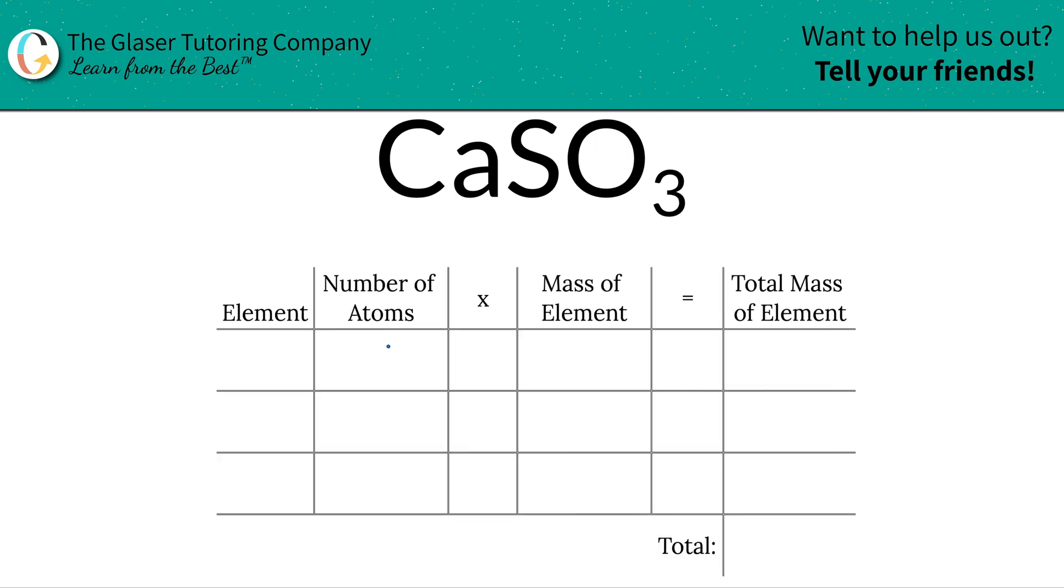So the first thing is I'm going to write down the elements in the compound. So we have calcium, Ca, we have sulfur, S, and we have oxygen, O.